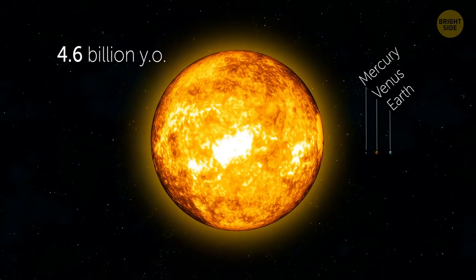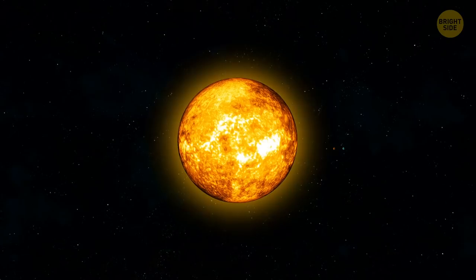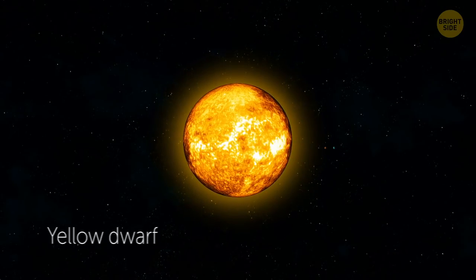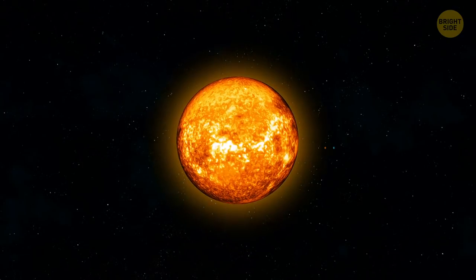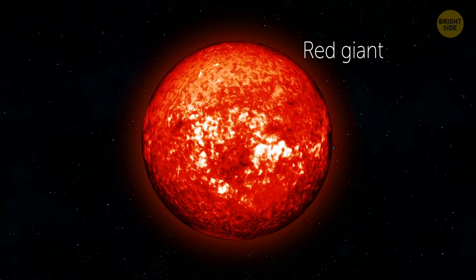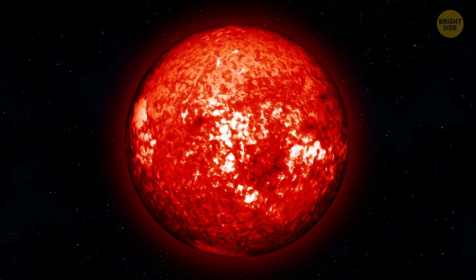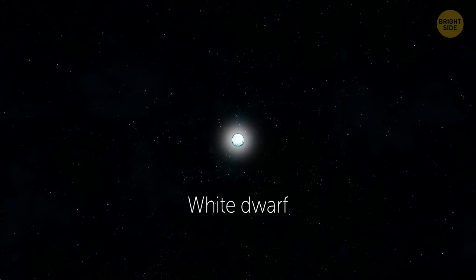At 4.6 billion years old, the Sun is considered a middle-aged star. It's halfway through its life, and it's known as a yellow dwarf. When it becomes a senior and burns up all its fuel, it will swell into a red giant and swallow Mercury, Venus, and probably Earth. But after that, it will shrink down and become a white dwarf. How rude.